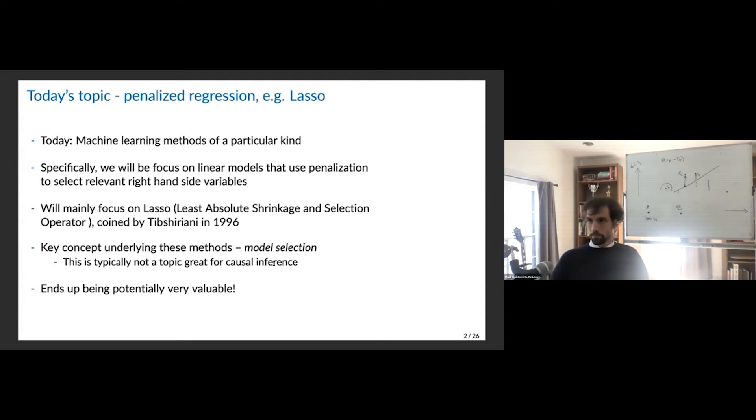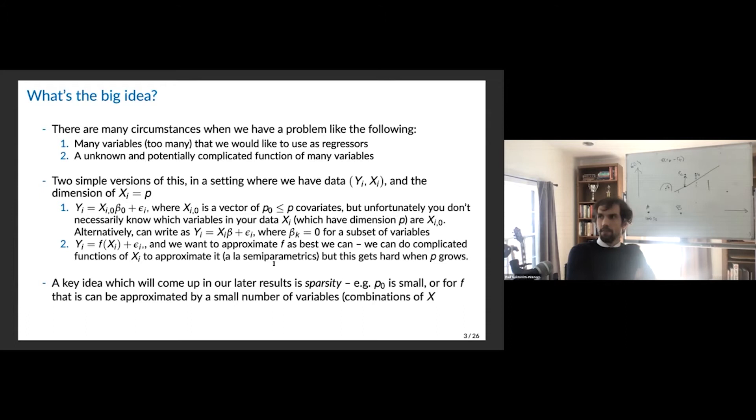So what's the big idea? There are many circumstances where we have a problem like the following: many variables, sometimes too many — meaning we have more variables than observations that we'd like to use as regressors. We'd like to put them on the right-hand side because we think they're predictive or they soak up variation.